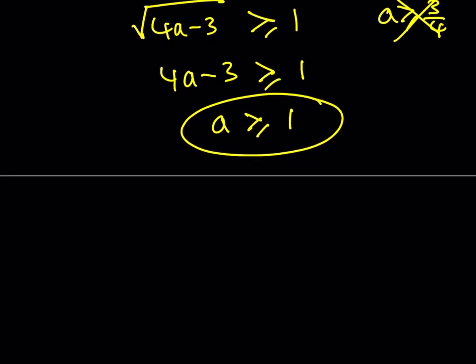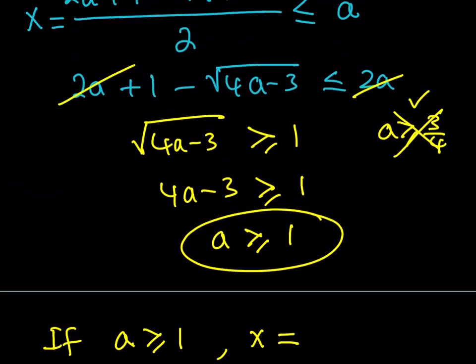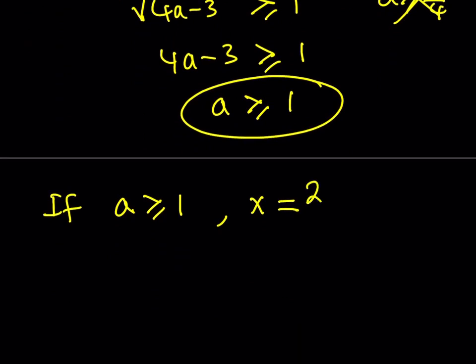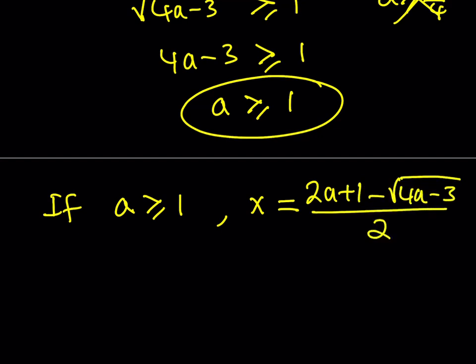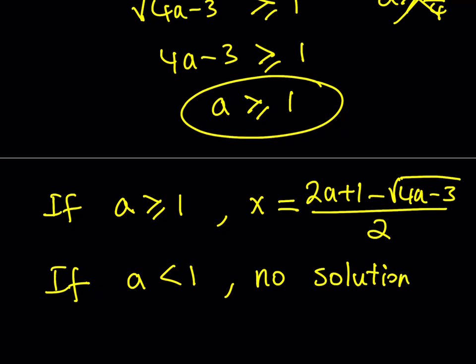If a is greater than or equal to 1, then the solution is x equals (2a plus 1 minus the square root of 4a minus 3) all over 2. If a is less than 1, there are no solutions. That brings us to the end of the video — thank you for watching, please comment, like, and subscribe, and I'll see you tomorrow with another video. Be safe, take care, and bye bye.